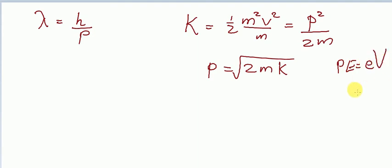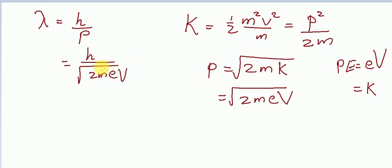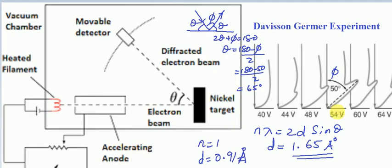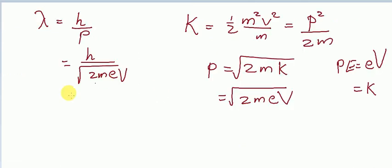Substituting into the expression for lambda, we get lambda equals H divided by the square root of 2M times e times V. By substituting the values — H is Planck's constant, M is the mass of the electron, e is the charge of the electron, and V is the potential — in this particular case the potential is 54 volts. Calculating the wavelength using this voltage gives a value of 1.67 angstrom.